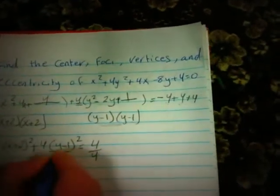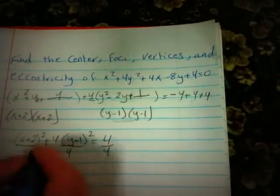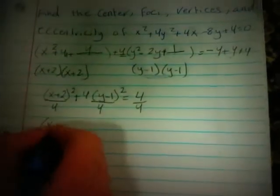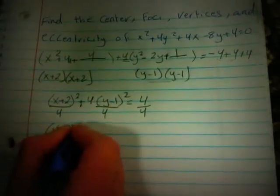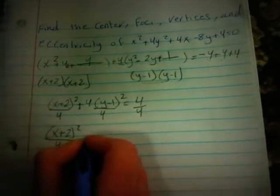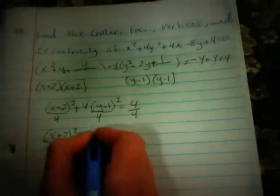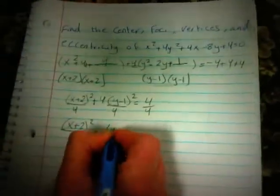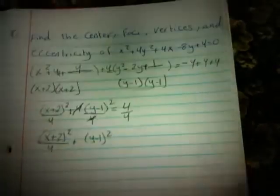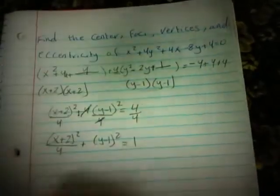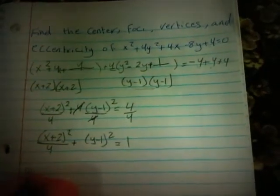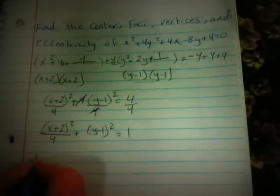Then we divide all sides by 4. We get x plus 2 squared over 4, plus y minus 1 squared — the 4 cancels out — equals 1. Now we have our standard form of the ellipse.